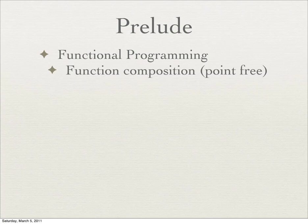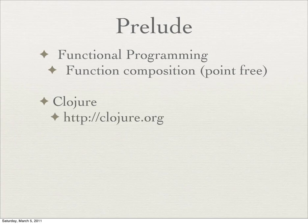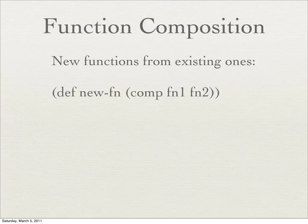One thing I'll be starting with is function composition, where you have two functions and you put them together to make a third function, a new function, where the output of the first is fed into the input of the second. All the examples you'll see are in Clojure. I wanted to do Clojure instead of Haskell because, first of all, I don't know Haskell very well, and I also wanted to show that Monads are not strictly relegated to Haskell — they can be used in other languages. Clojure.org is the website. You're going to see a lot of parentheses — don't worry about them.